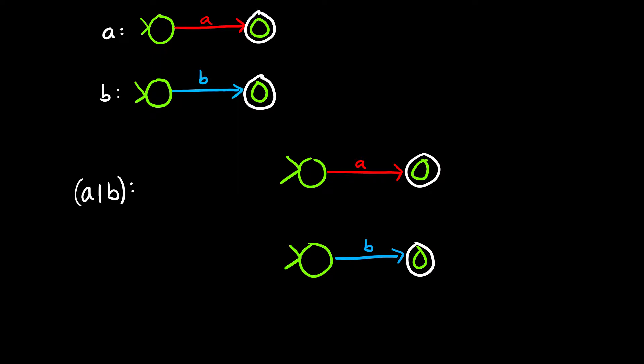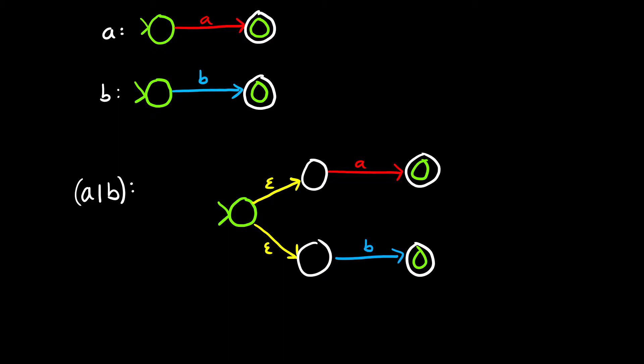When we perform a union on these two, the first thing is we erase the arrows that make these start states, and we create a new start state. We're going to connect to the old start states with an epsilon arrow. This is also the new start state, so let's change the color of these other start states to white because they are no longer start states.